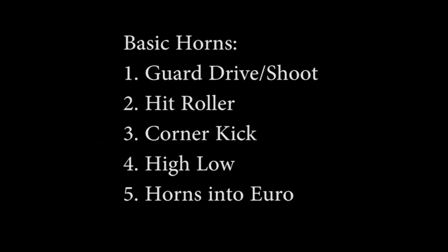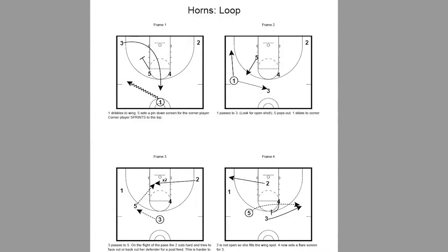So that is the basic — very basic — horns offense. In an earlier video on quick hitters, I spoke about the horns loop set, but I wanted to expand on that in this video to show more clips of it and how it can be a very effective set to run out of horns. We would run horns loop, again sort of as a slightly more complicated entry into our basic offense. If we didn't score off of this, we would just flow into our ball screen stuff.